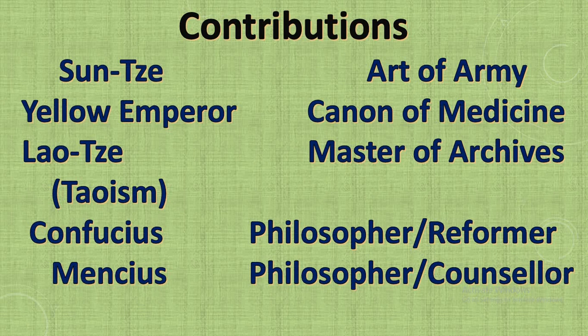Sun Tzu was a military strategist who wrote the Art of War, giving importance to the army and wanting to rid the country of its enemies. The second contributor is the Yellow Emperor, who wrote the Canon of Medicine — it is said to be the earliest written book on medicine.